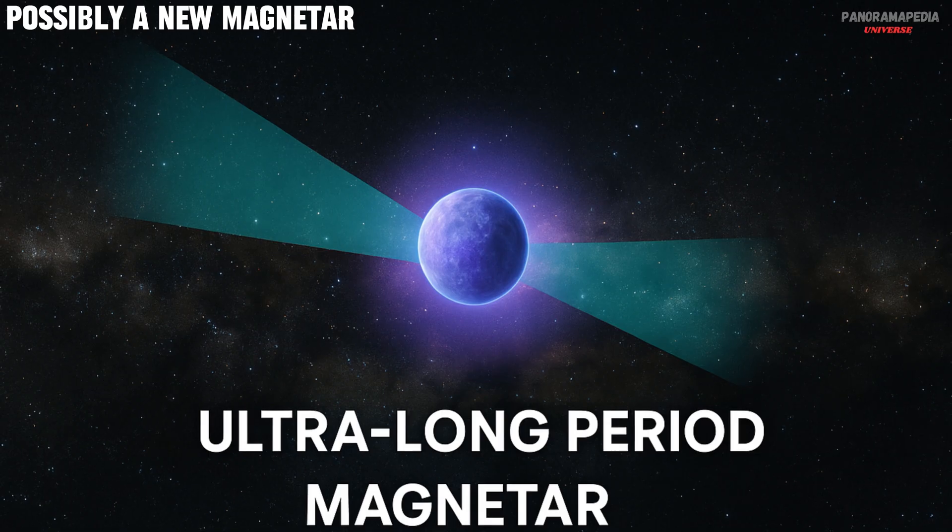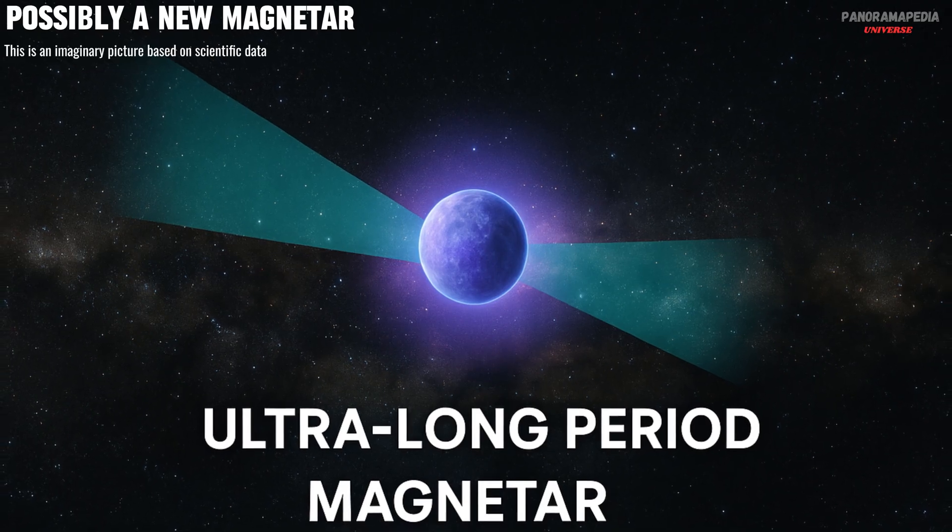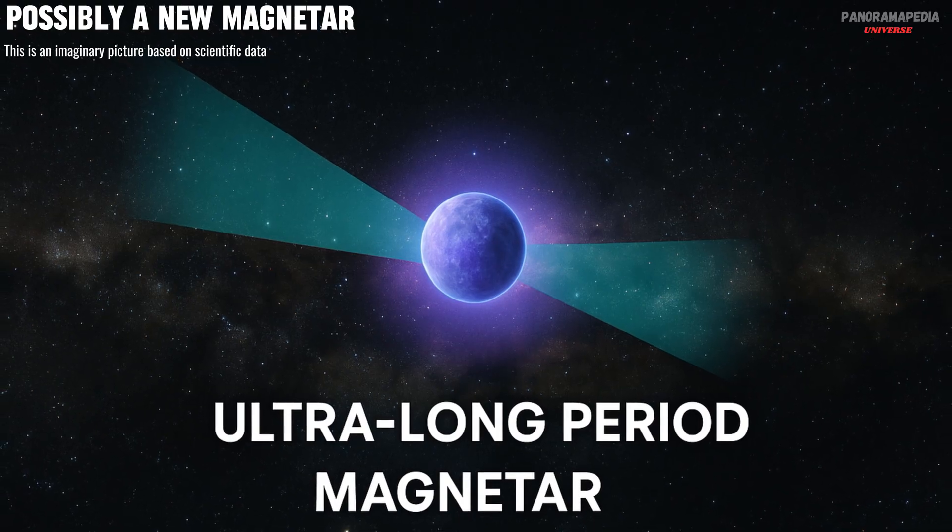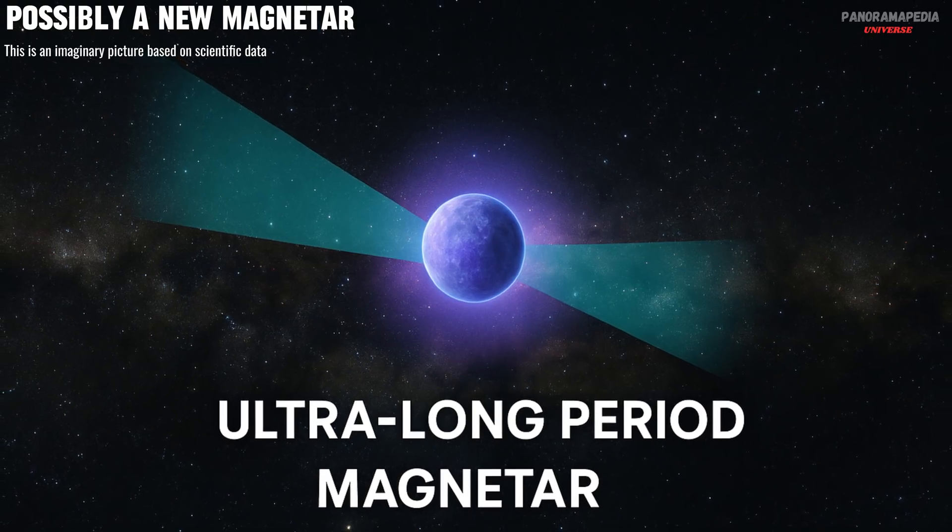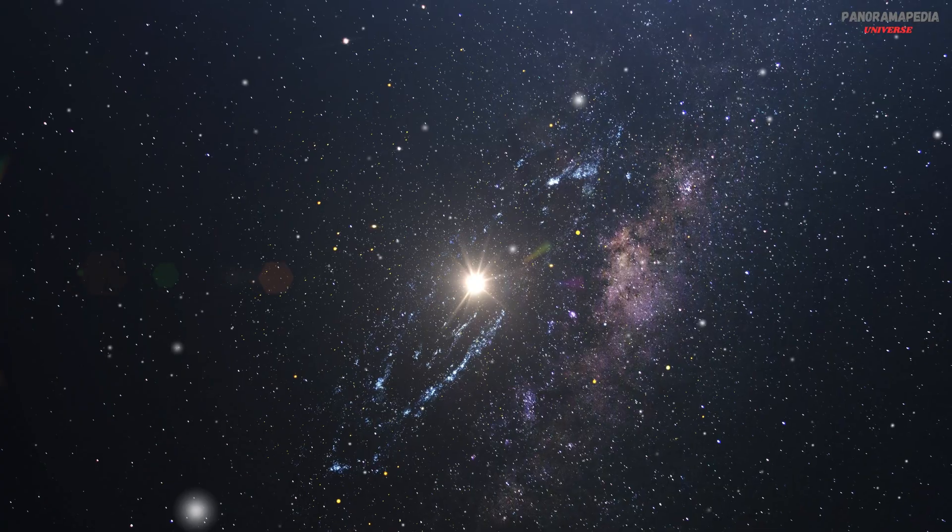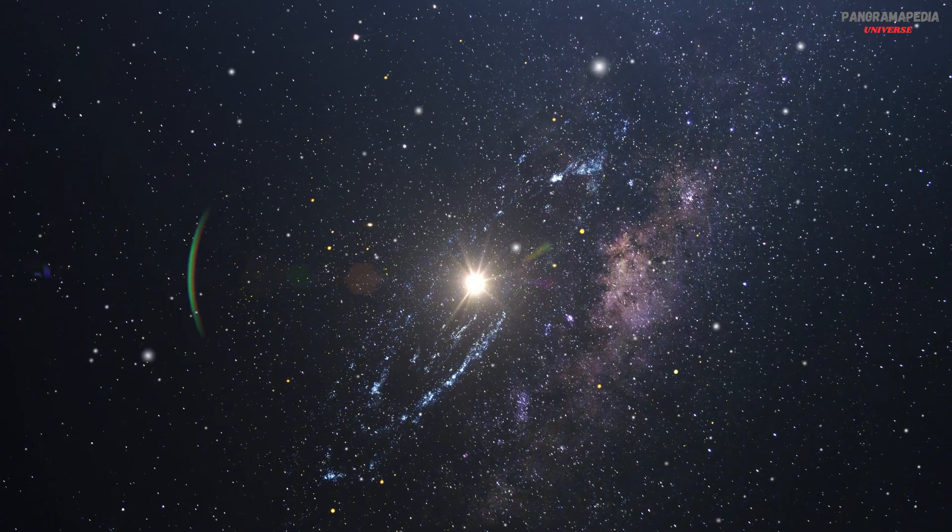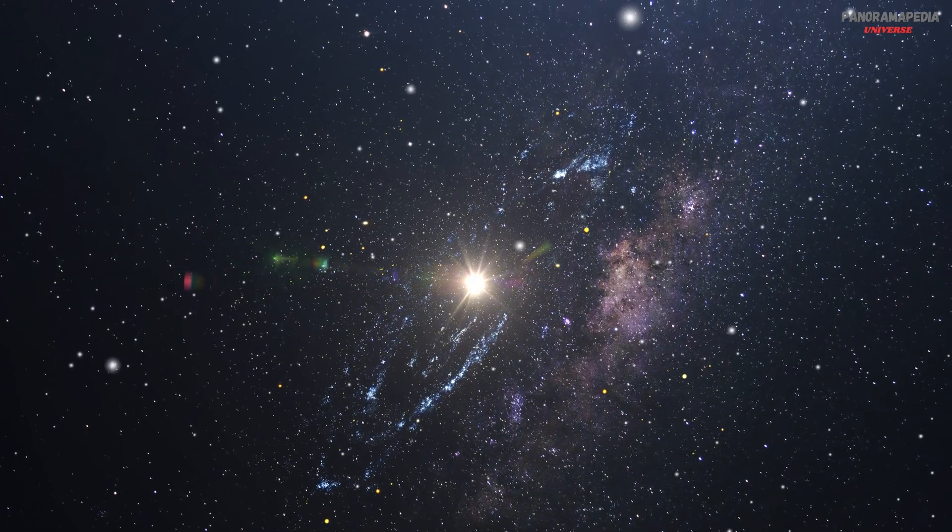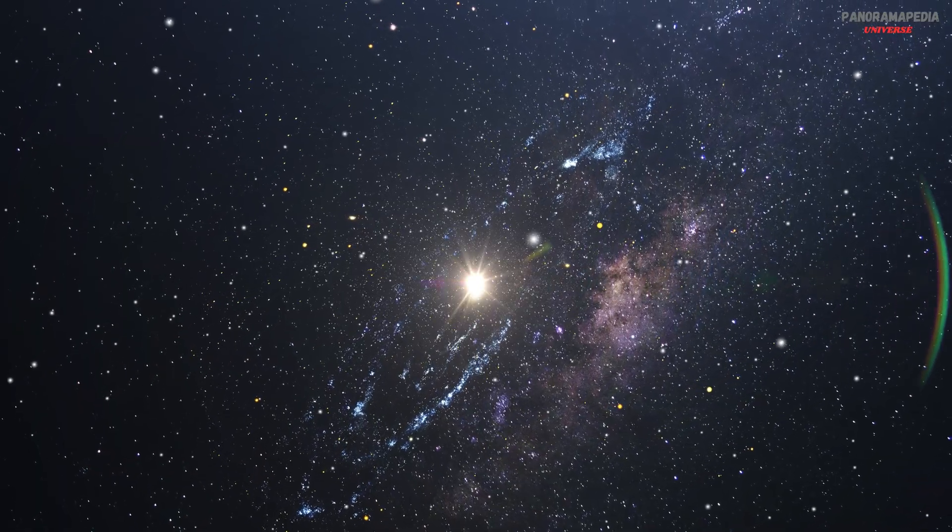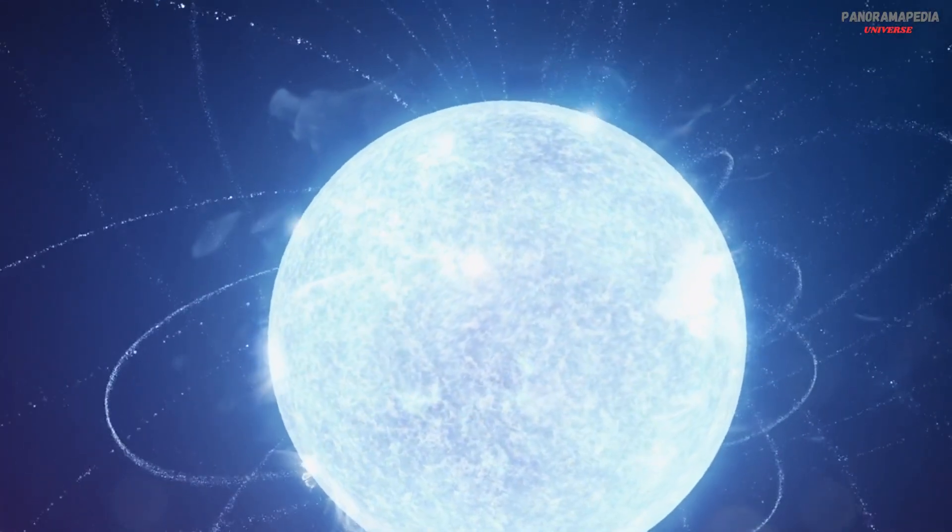So what was it? Scientists now believe it was likely a new kind of magnetar, one with an extremely long rotation period, somehow still active. A type never seen before. But because we've only detected one, and only for a short time, we don't know. Was it a rare one-time flare-up? Or are there more out there, blinking so slowly we've missed them all?